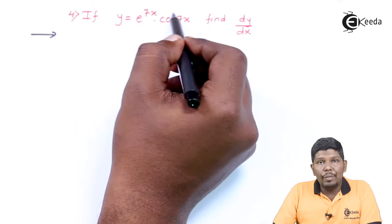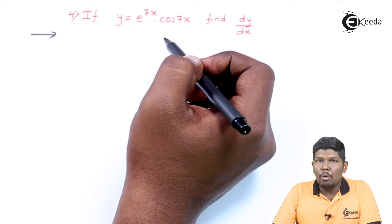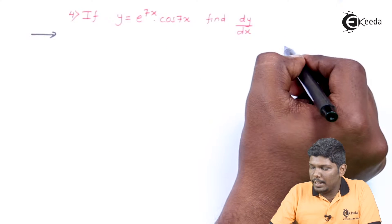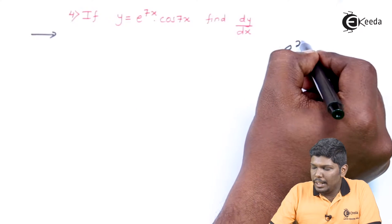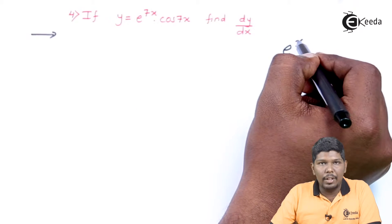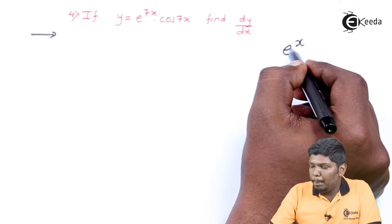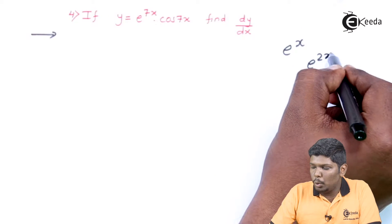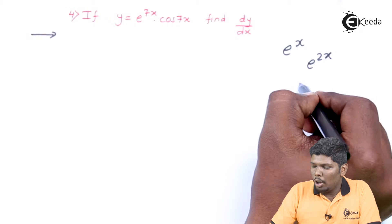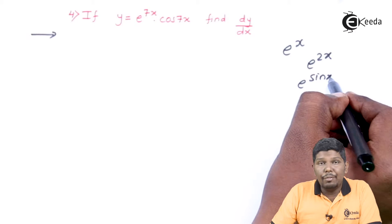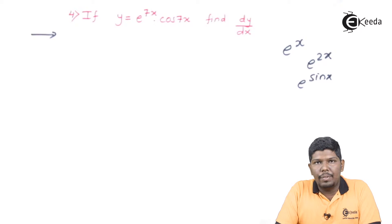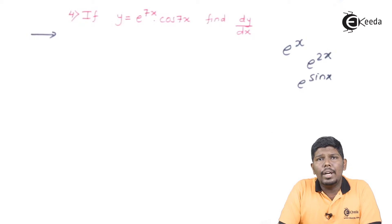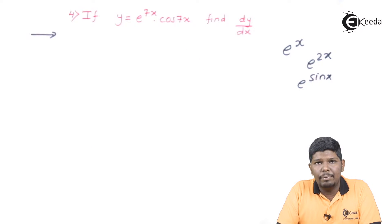These two functions are composite functions. What are composite functions? If I say the function e raised to x, this is a standard function. But if I replace x by any other function, like e raised to 2x or e raised to sin x, that function becomes a composite function. To find the derivative of this function, we are going to use the UV rule.